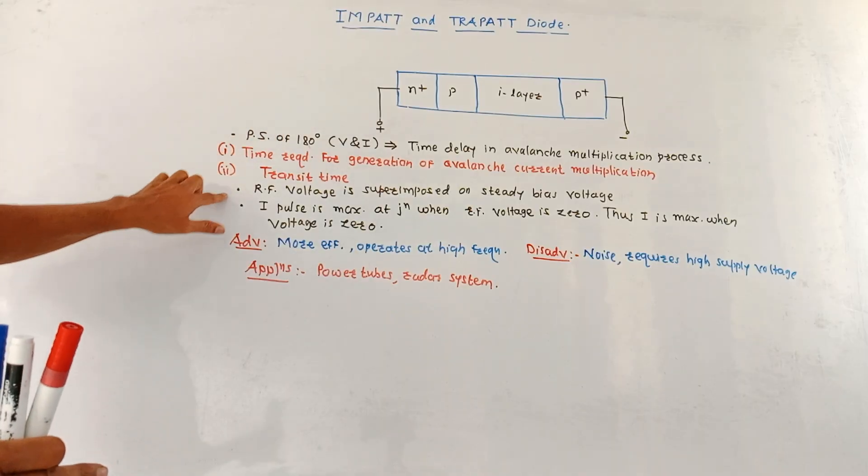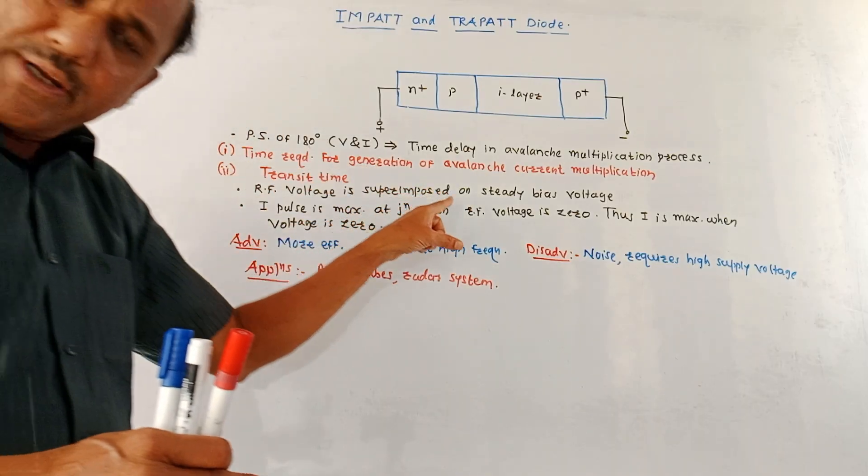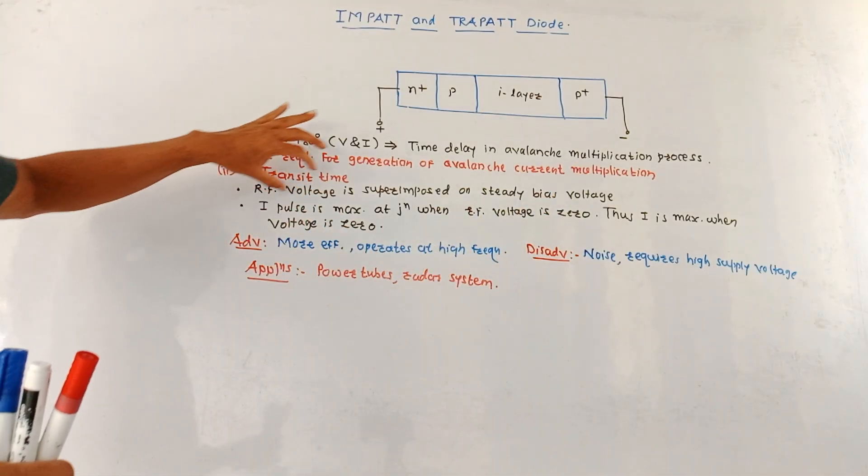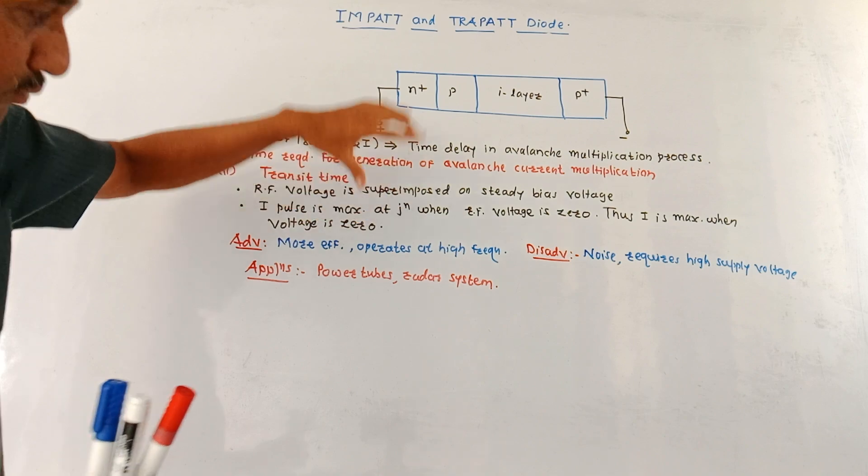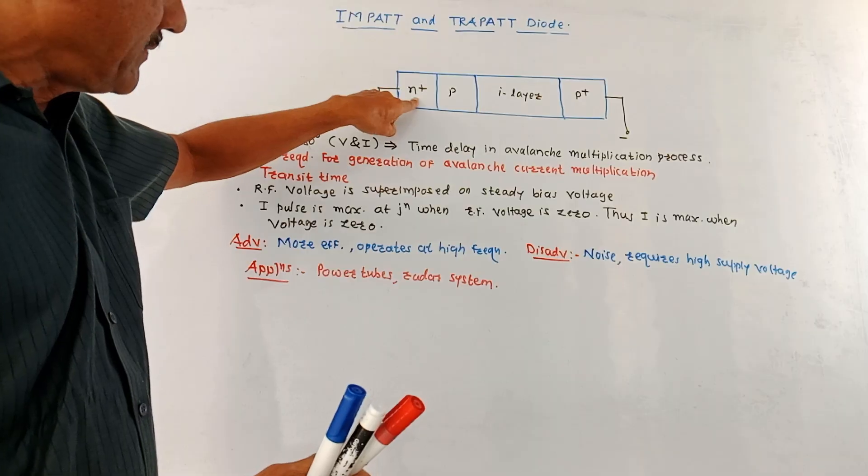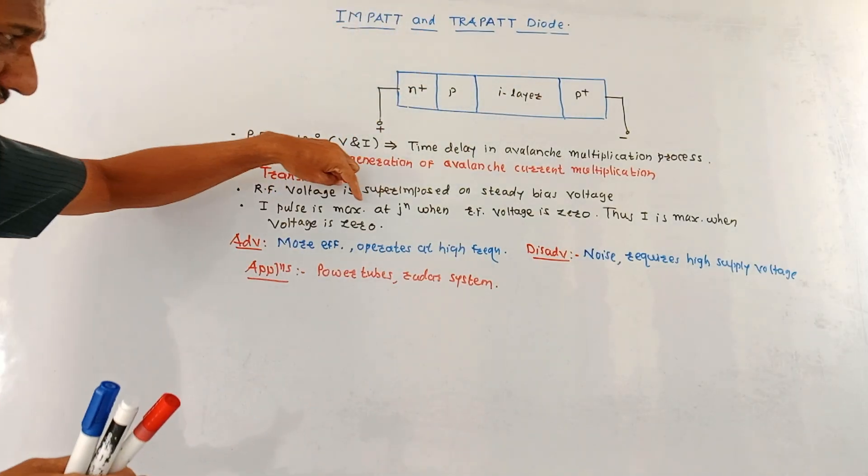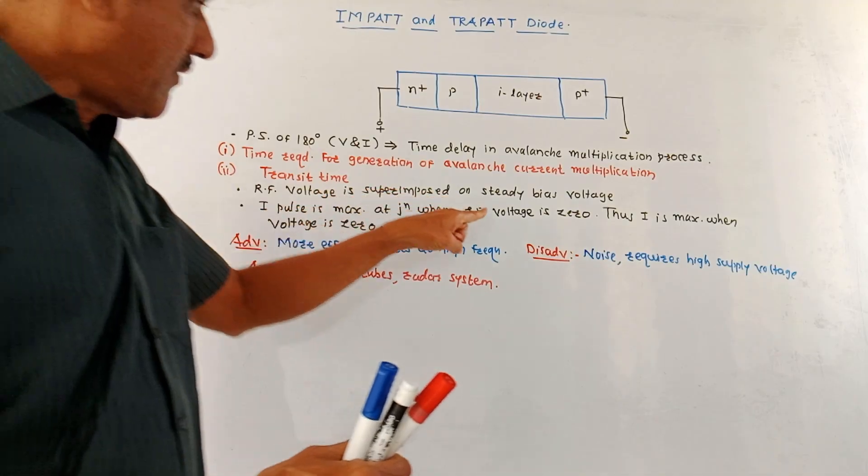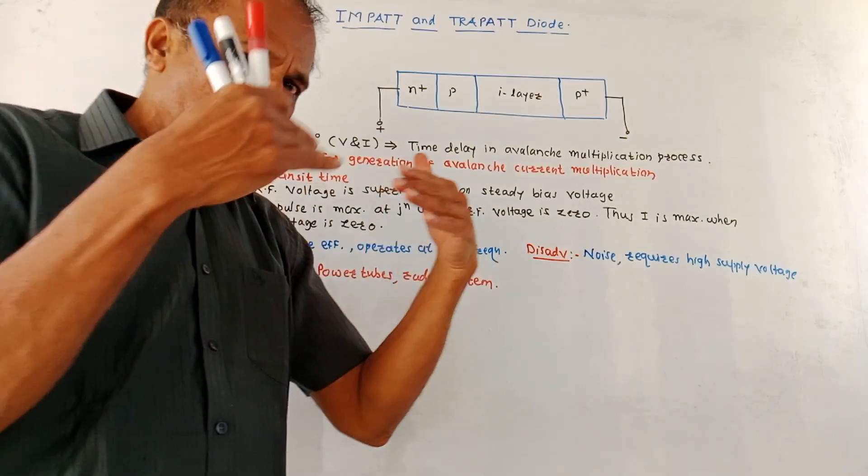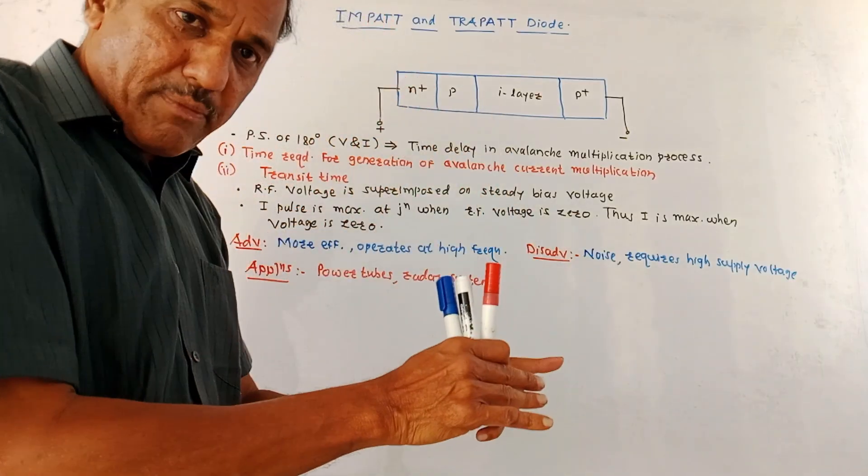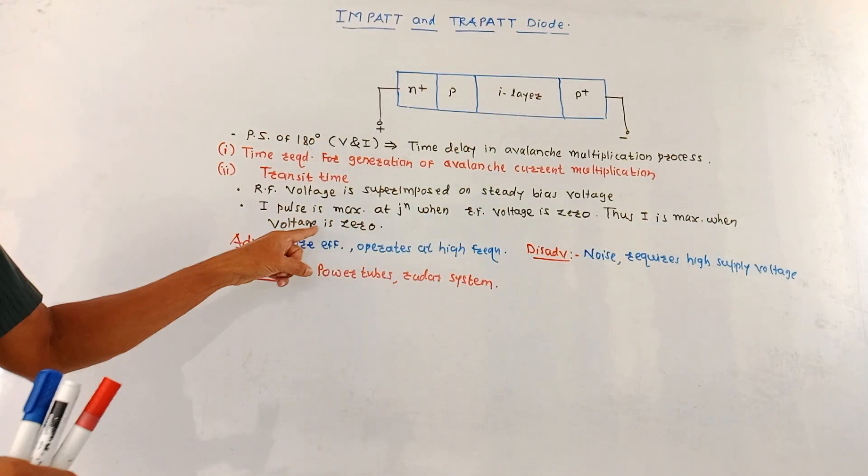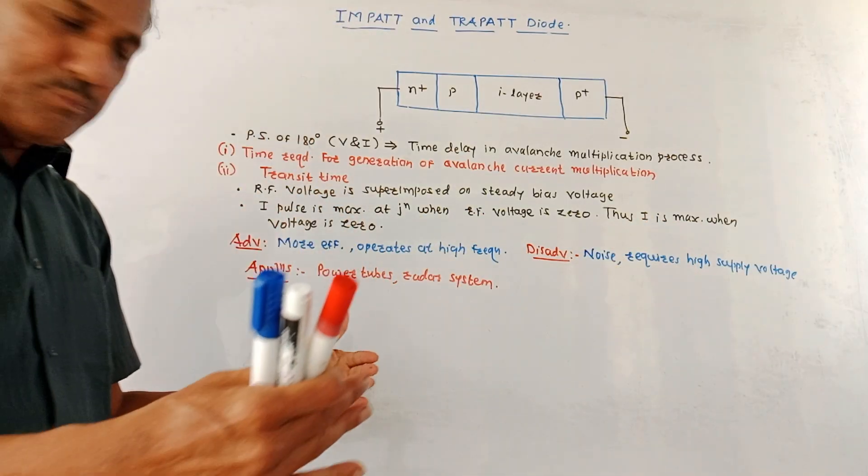The major characteristic in this case is here the RF voltage is superimposed on the steady bias voltage. Now the current is maximum at the junction. We will consider that the multiplication, avalanche multiplication takes place in the thin layer between N plus and P region. So current pulse is maximum at the junction when RF voltage is zero. This current pulse is not maximum when RF voltage is at pi by two but it becomes maximum when RF voltage is zero. Thus the current is maximum when voltage is zero. That means there is a phase shift of 180 degree.